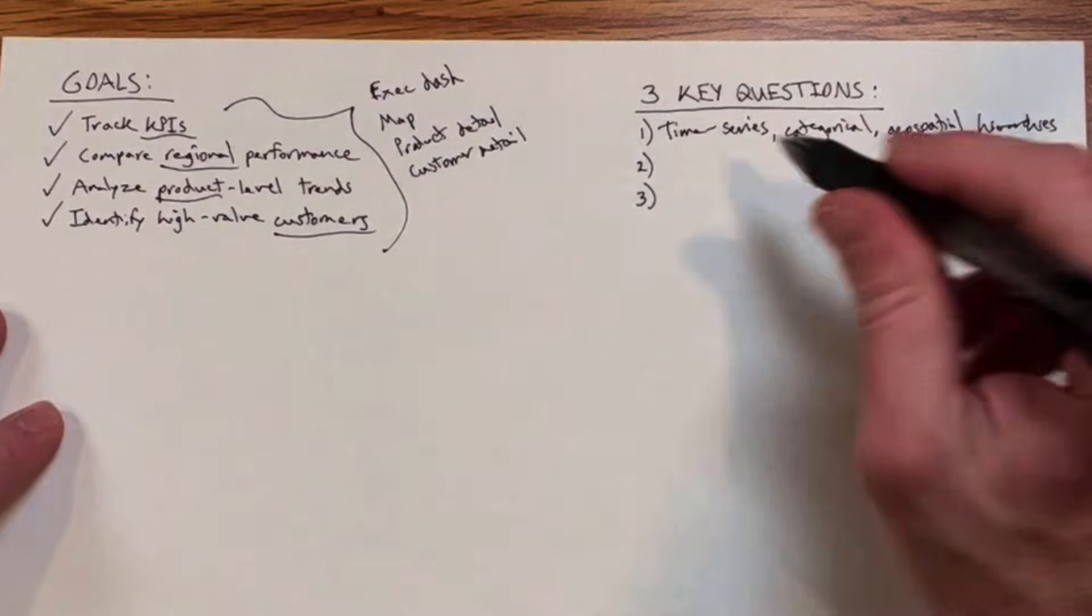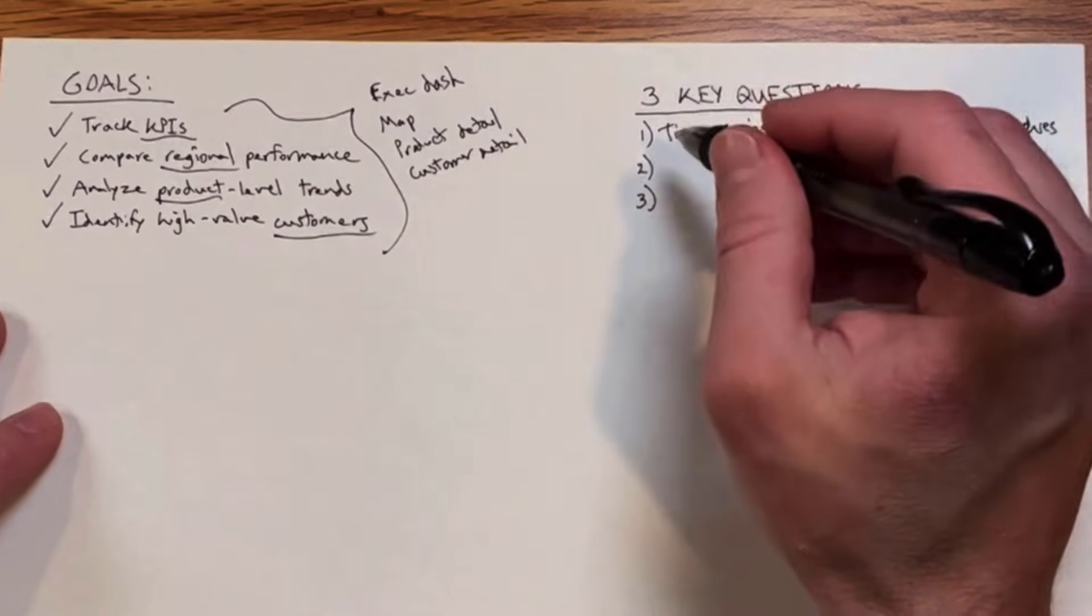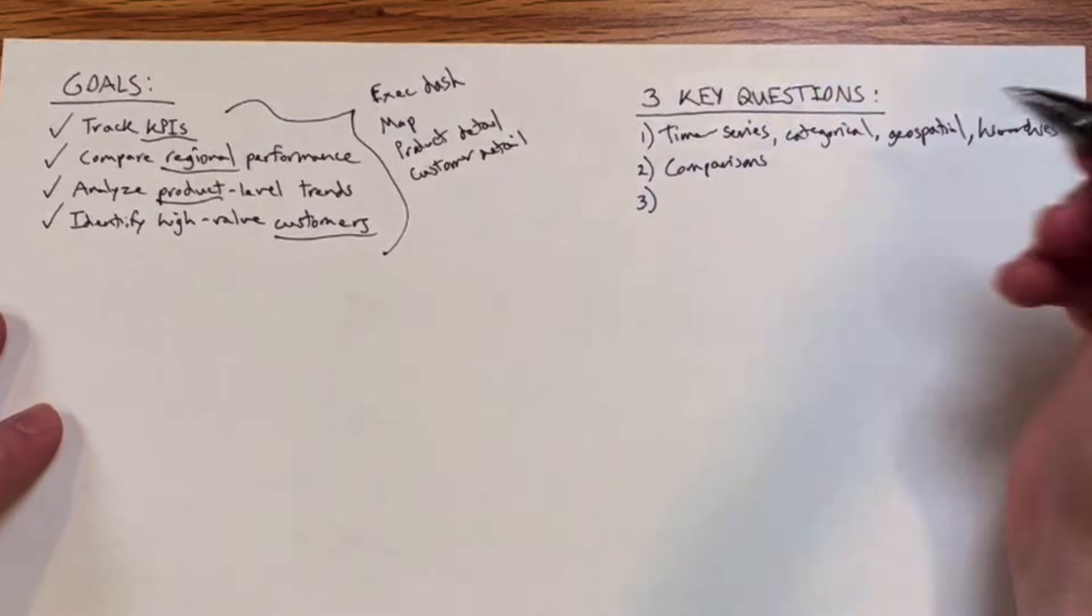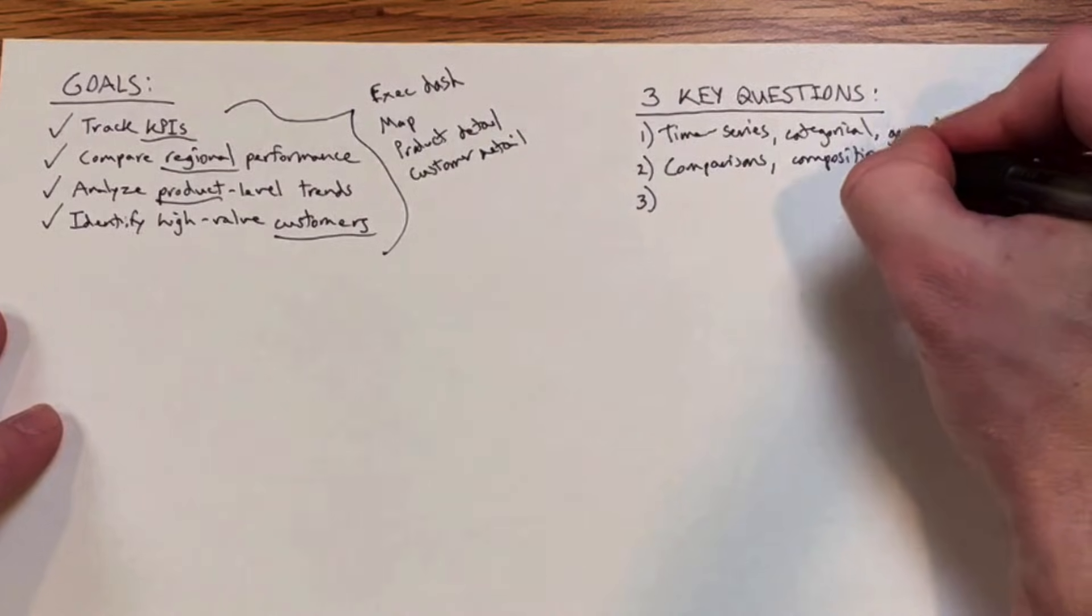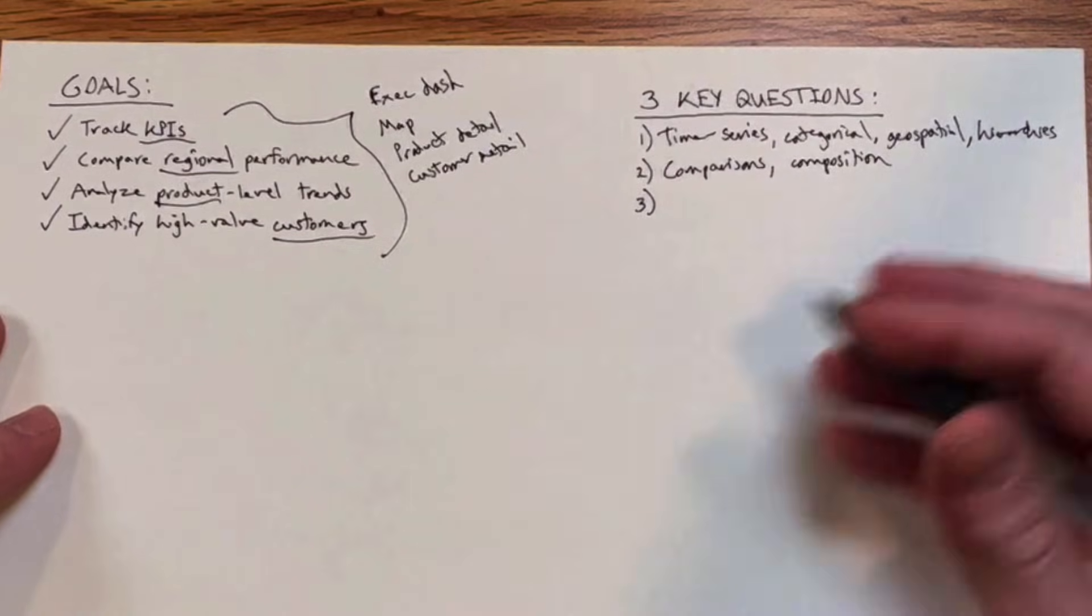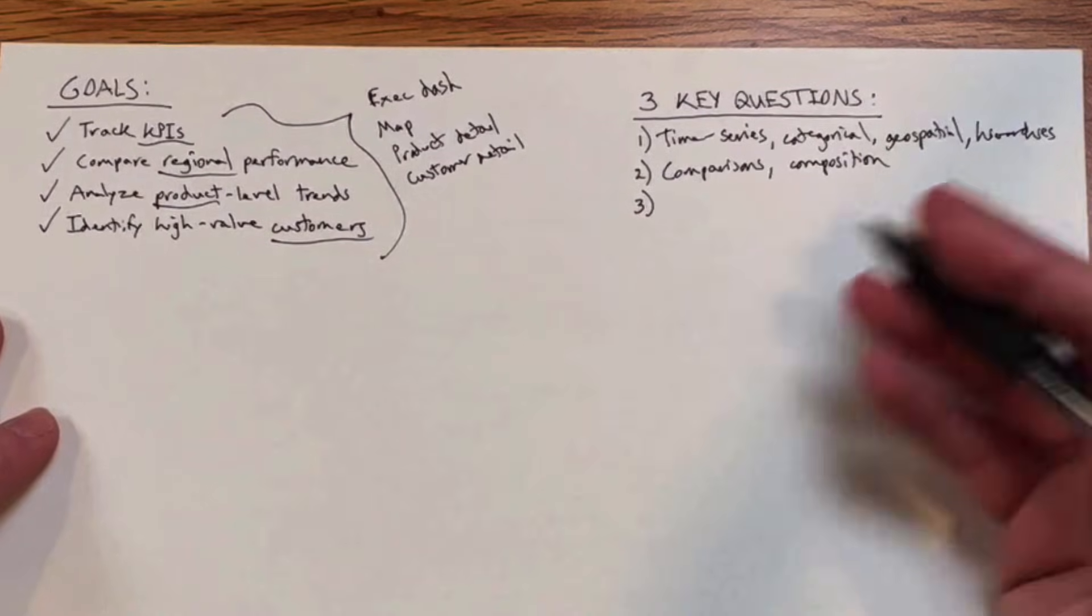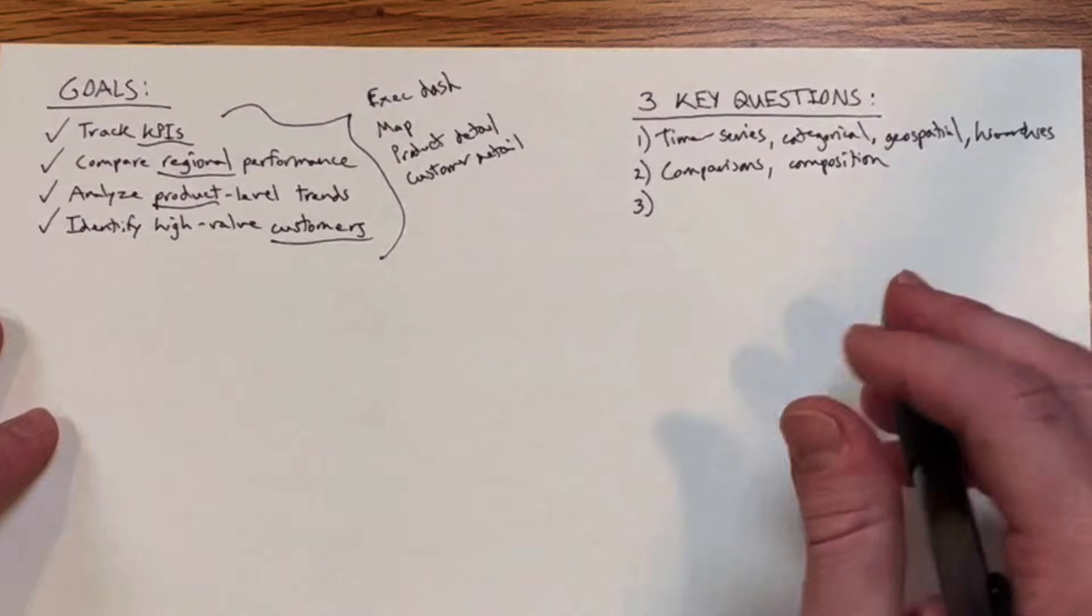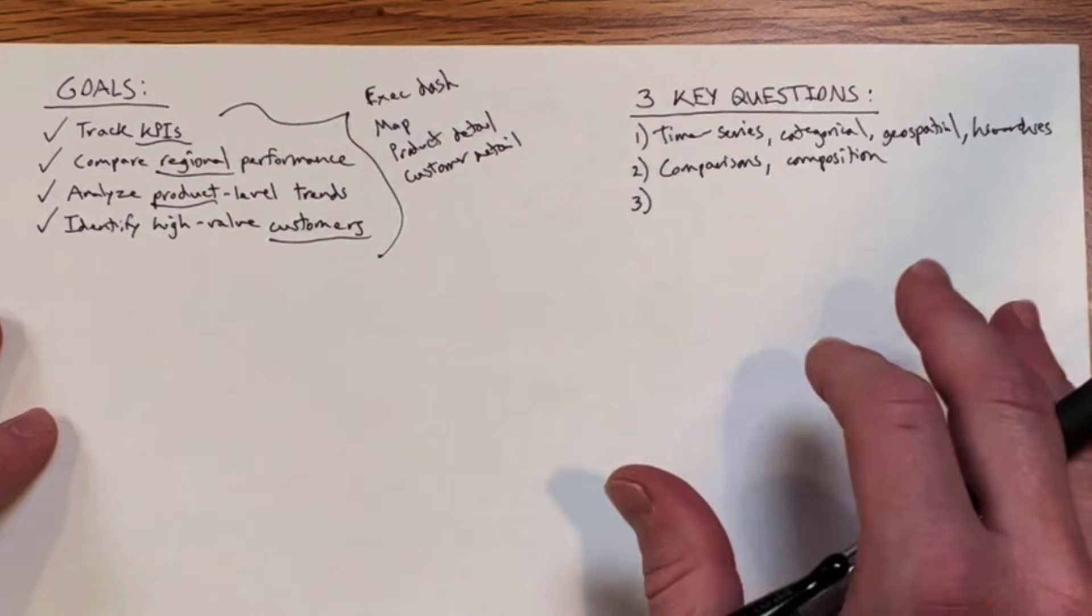Question two, what are we trying to communicate? Well that may vary depending on the individual visual, but generally speaking we'll definitely be showing some comparisons between categories and certainly over time, and we'll also show composition. We've got some great demographic fields in our customer data set that we can use to make some interesting compositional analyses there. We likely won't be doing much in terms of distribution or relationships with this data set, so I think primarily we're going to be focusing on comparisons and composition. We should expect to see a lot of line charts, bar and column charts, maybe some donuts, some gauge charts, things like that.